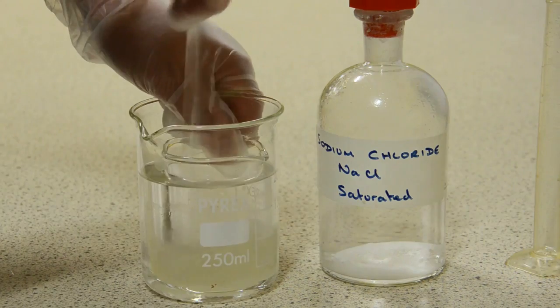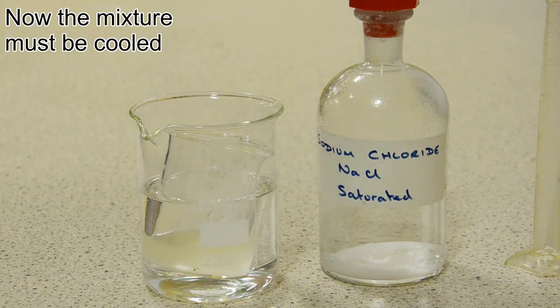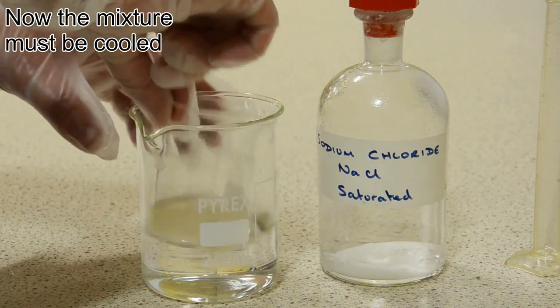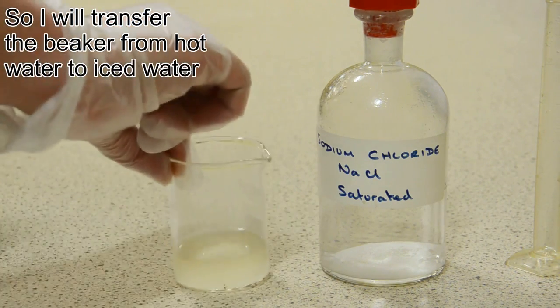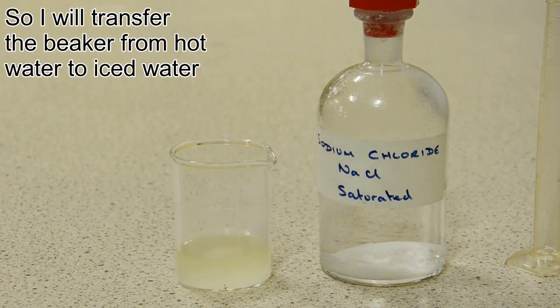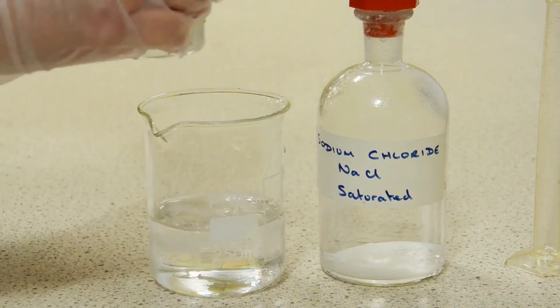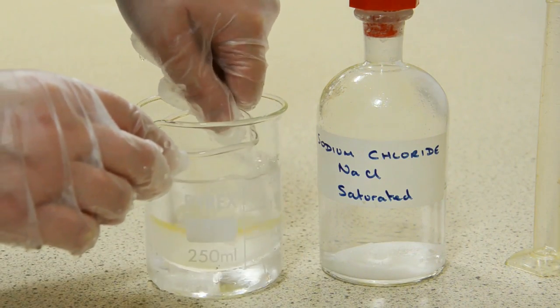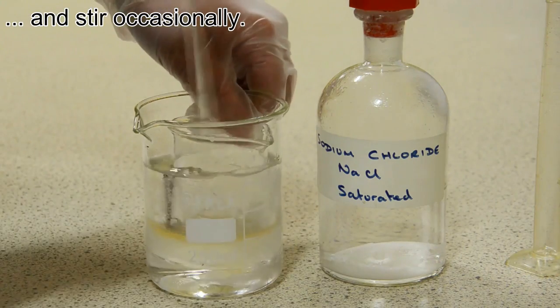After this we're going to need to cool the mixture in iced water. This is going to help the soap to precipitate out. The longer we can possibly leave it, the greater the yield of soap is going to be. I'm going to leave my mixture on ice for about 15 minutes, stirring occasionally every couple of minutes or so.